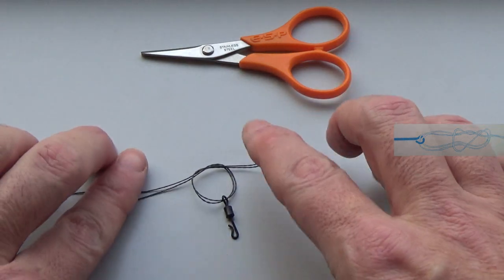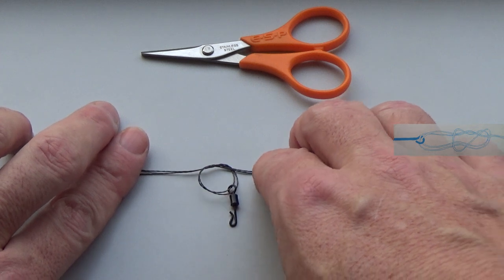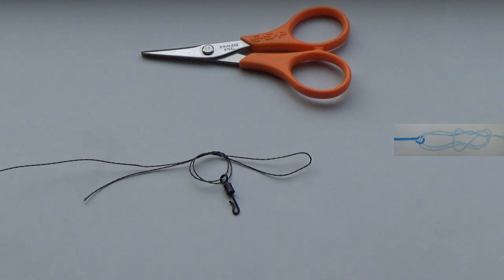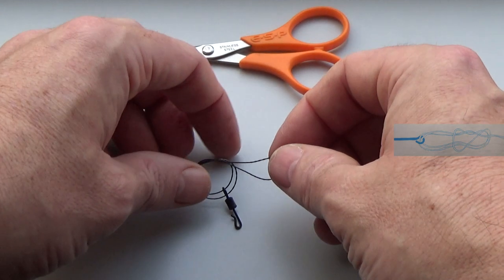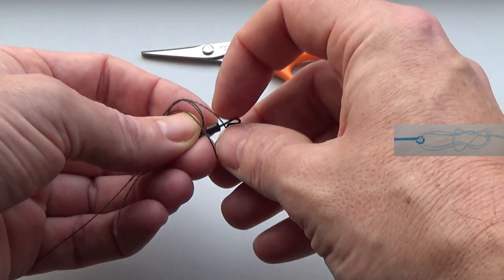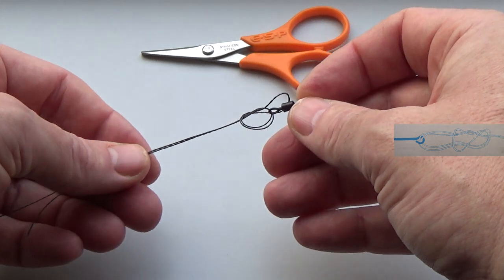I'm going to put that down so you can see it. From there, all we do is take the swivel and thread it through the loop and pull it tight.